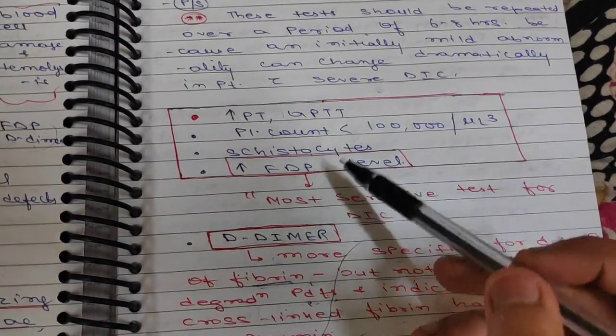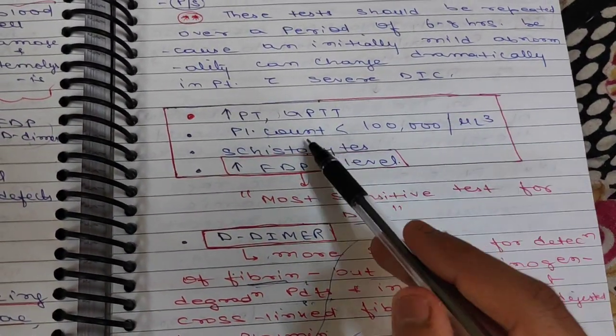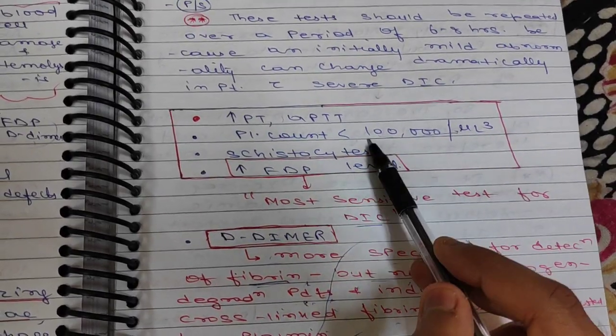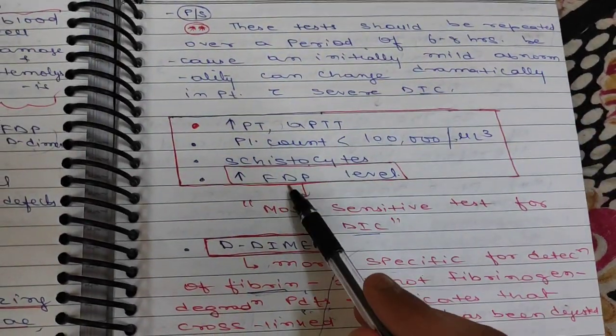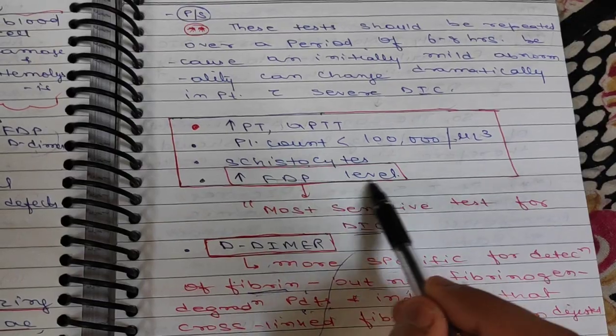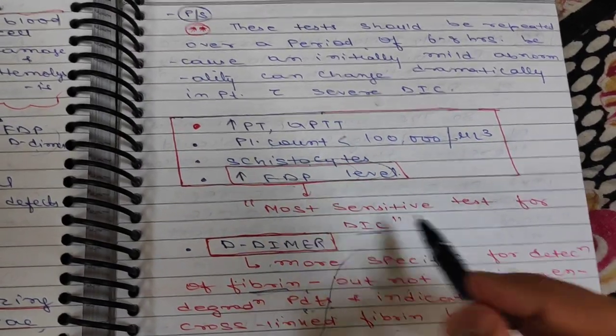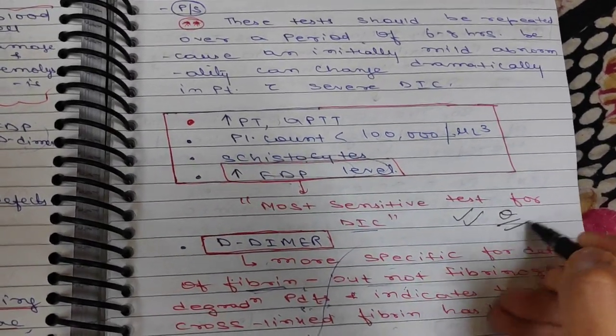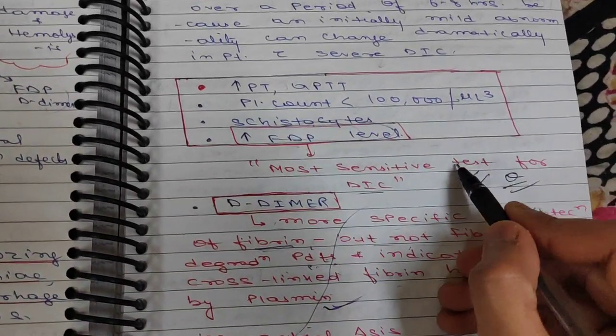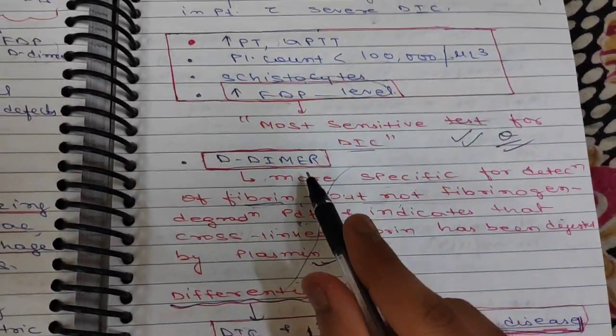Increased PT and aPTT will be there. Platelet count less than 100,000. There will be schistocytosis on peripheral blood smear and increased FDP level. Increased FDP level is the most sensitive test for DIC. This is generally asked as a question.